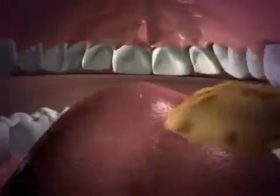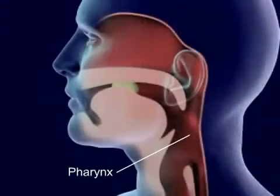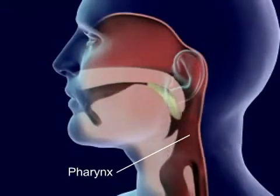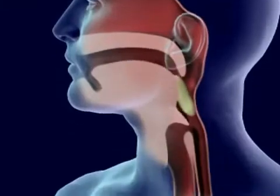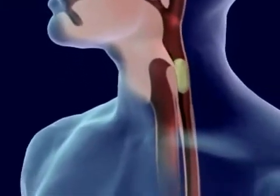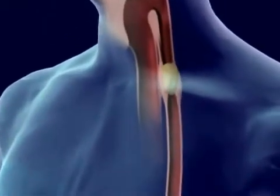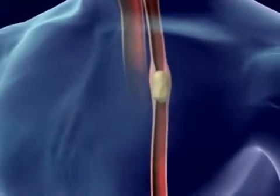Food is forced back into the throat, the pharynx, by the tongue. Food in the pharynx stimulates the swallowing reflex. The larynx is pulled upward to meet the epiglottis and seal off the trachea. Food goes from the pharynx to the esophagus.